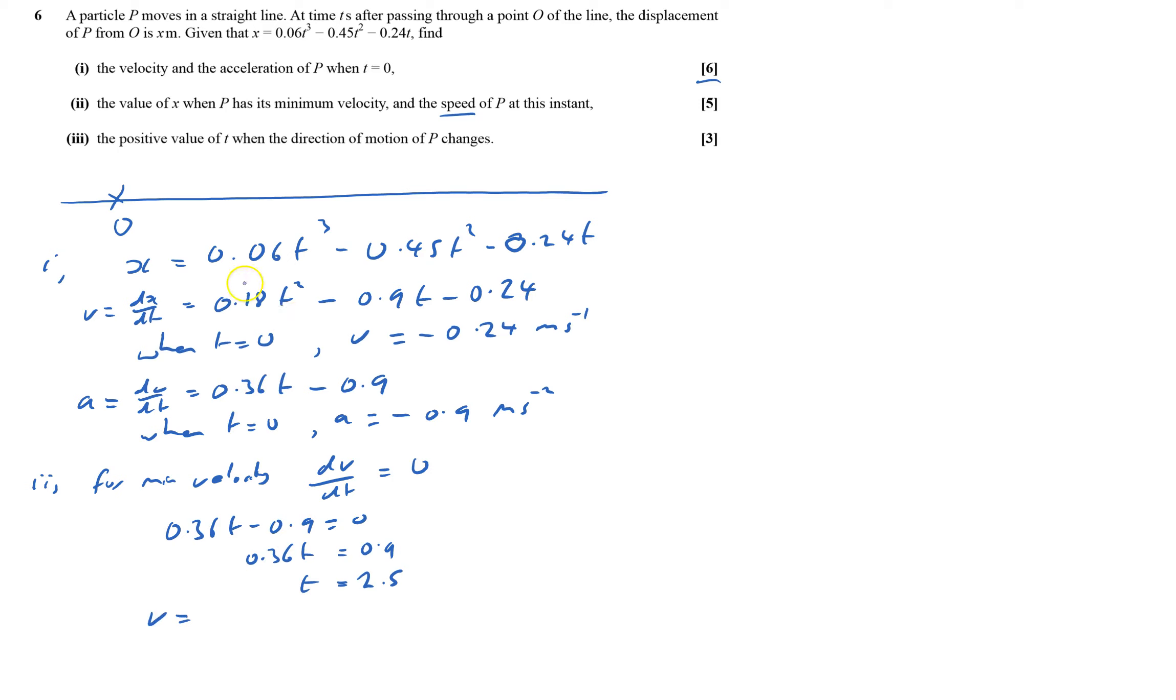And so velocity equals 0.18 times 2.5 squared minus 0.9 times 2.5 minus 0.24. And so that equals minus 1.365 meters per second.